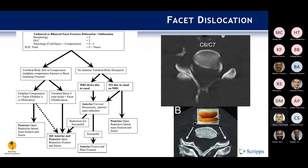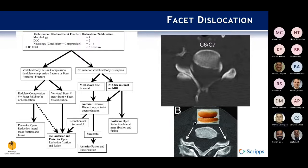Facet dislocations occur when the superior facet lies anterior to the inferior facet — the reverse hamburger sign. They can be unilateral or bilateral. Bilateral dislocations are associated with more severe ligamentous and soft tissue disruption. Acute disc herniations have been reported in approximately 50% of facet dislocations. There is controversy about the timing of reduction and whether to obtain a pre-reduction MRI — some advocate proceeding without MRI if the patient is awake and cooperative, while other studies recommend MRI first to look for herniated discs.